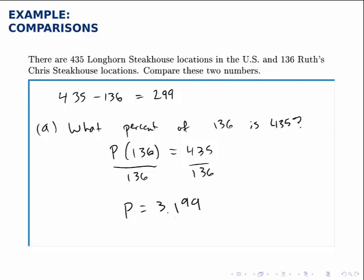We want that as a percentage though, so I have to move the decimal point two places to the right. So this corresponds to 319.9%. What that says is that Longhorn Steakhouse is 319% as large as Ruth's Chris Steakhouse. So roughly three times as large.